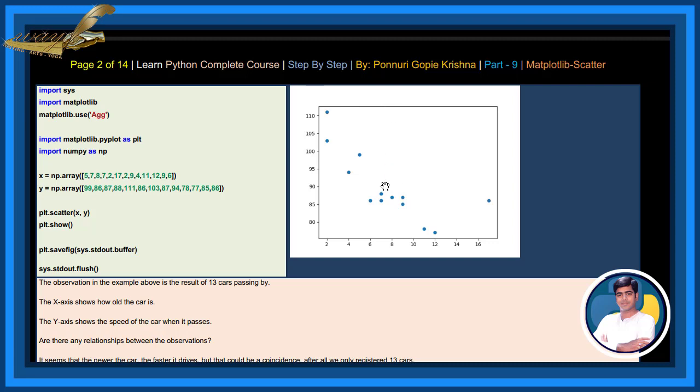Are there any relationships between the observations? It seems that the newer the car, the faster it drives, but that could be a coincidence. After all, we only registered 13 cars.